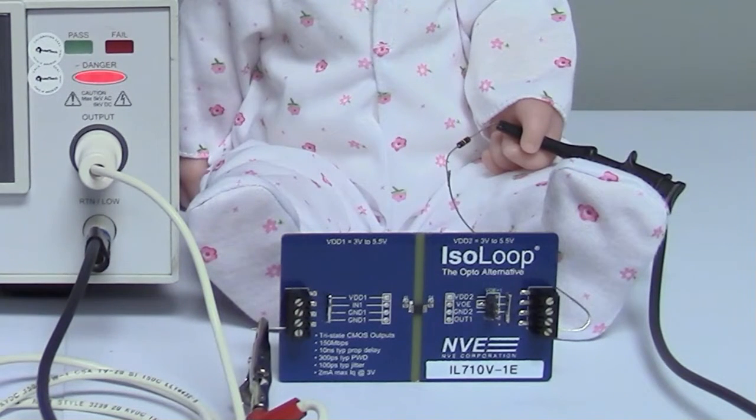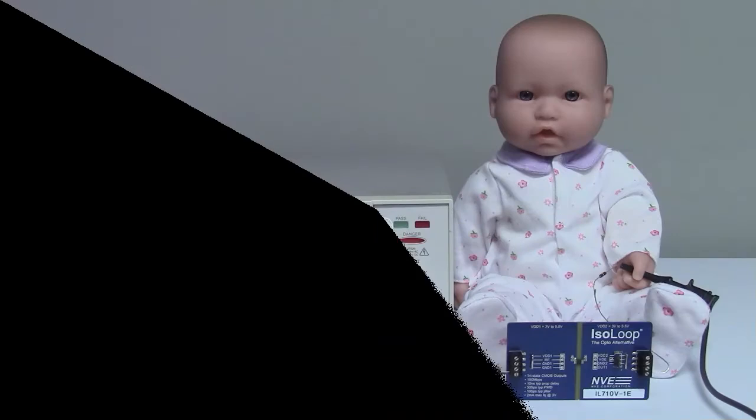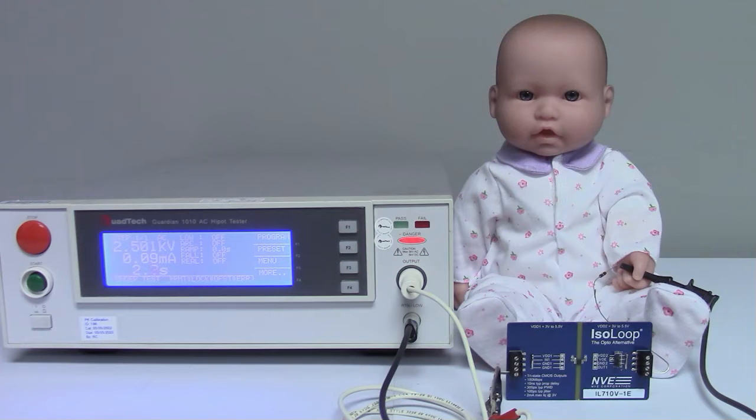This is the smallest isolator in the world that meets the 2,500 volt standard. It's just three millimeters square, less than an eighth of an inch. The UL standard is for a one-minute test and the isolator passes.